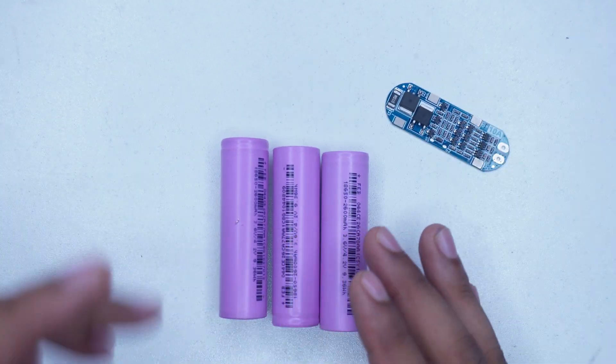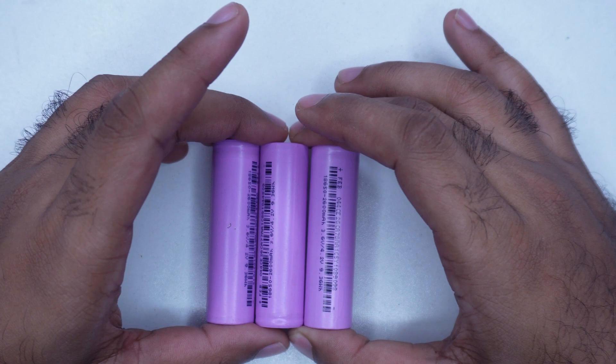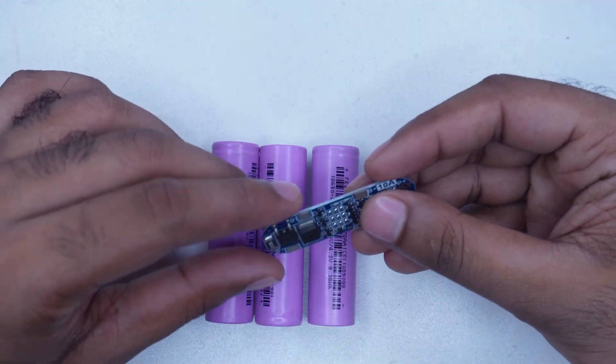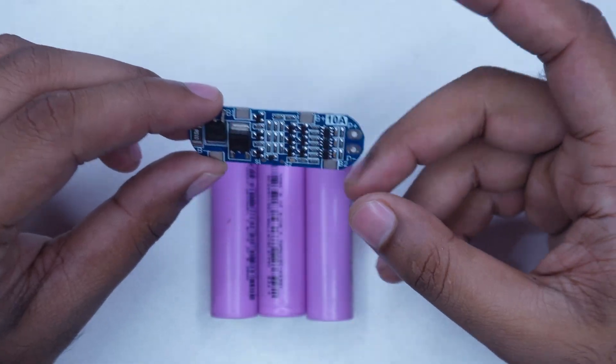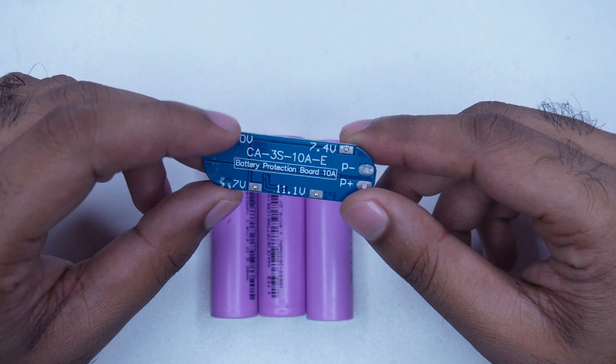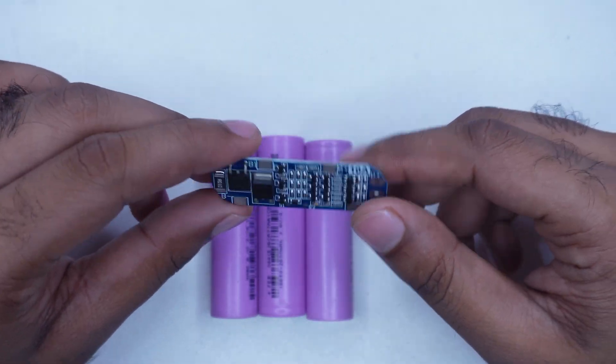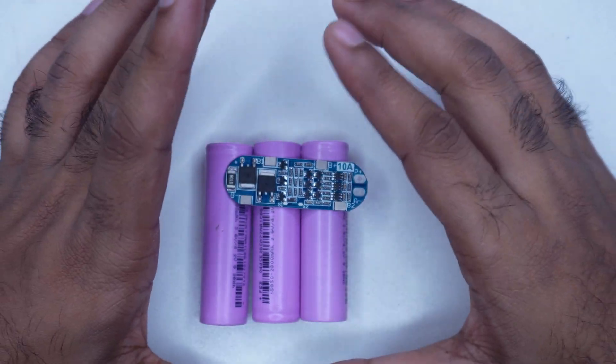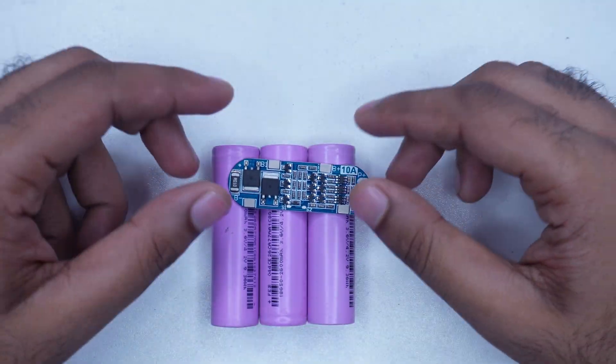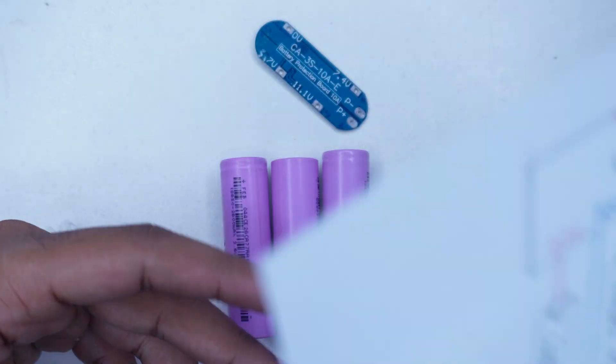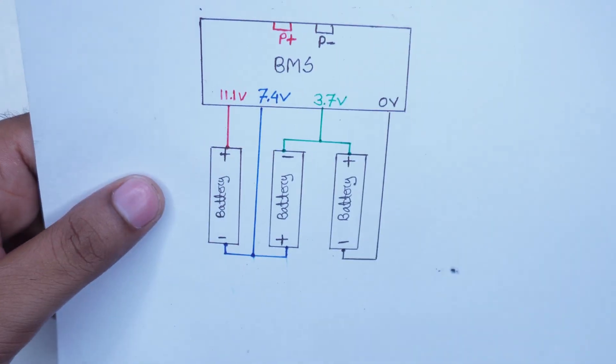We know lithium batteries need to charge and discharge each cell separately. For that reason, we will use this BMS circuit. The circuit here I am using is a 3S 10 ampere BMS circuit. Many people find it difficult to understand how to connect the battery cells to the BMS circuit, so I made a diagram here.